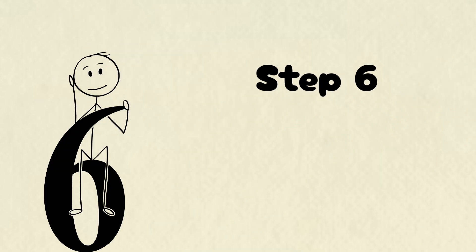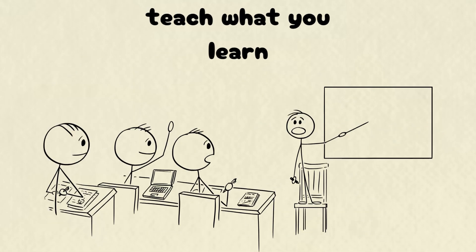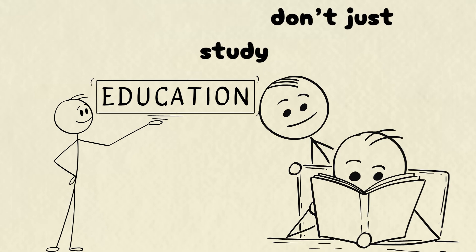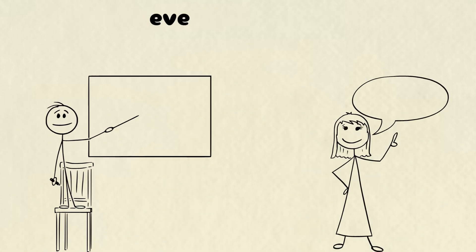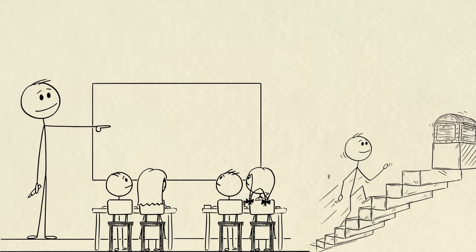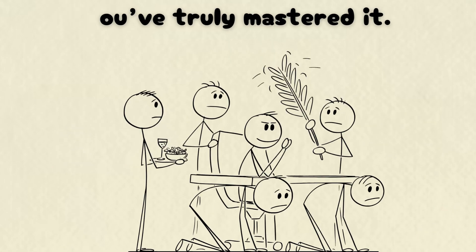Step six, teach back method. Explain to understand. Here's a powerful trick. Teach what you learn. Asian students don't just study, they teach. They explain concepts to siblings, friends, or even imaginary students. Teaching forces you to articulate every step, revealing gaps in your understanding. When you can explain a concept clearly, you've truly mastered it.